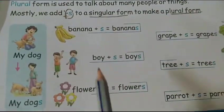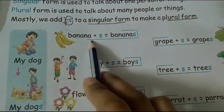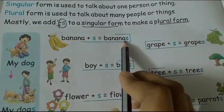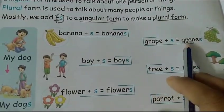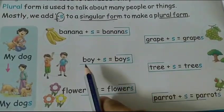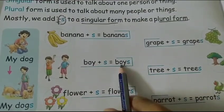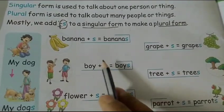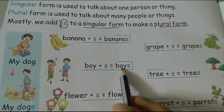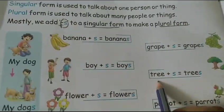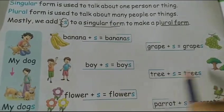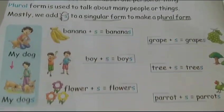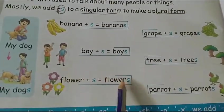See these pictures: like banana becomes bananas, grape becomes grapes, boy becomes boys, tree becomes trees, flower becomes flowers, parrot becomes parrots. Because this is not only a single thing, it's changed to plural form.